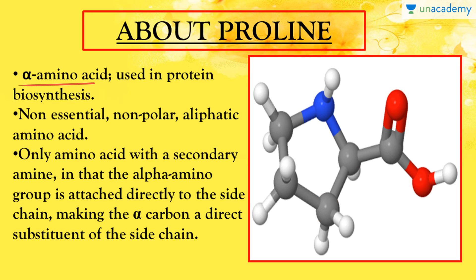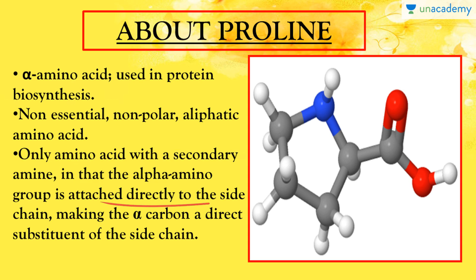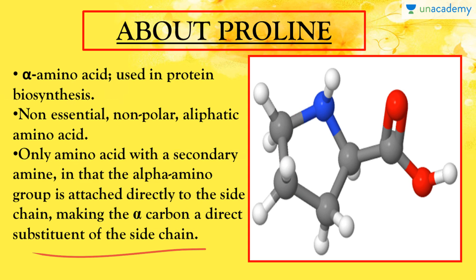Proline is an alpha amino acid used in protein biosynthesis. It is non-essential in nature, meaning it can be synthesized inside our body and we do not need to consume specific foods to maintain proper proline levels. Besides, it is non-polar and aliphatic due to its side chain. It is the only amino acid with a secondary amine group, where the alpha amino group is attached directly to the side chain, making the alpha carbon a direct substituent to the side chain — this is what makes proline different from all other 19 amino acids.